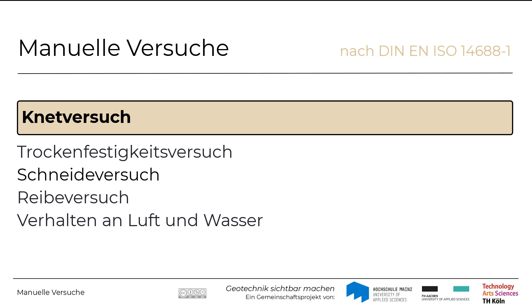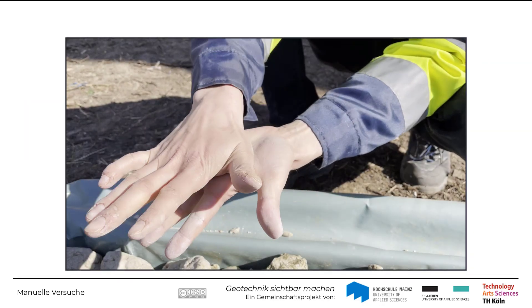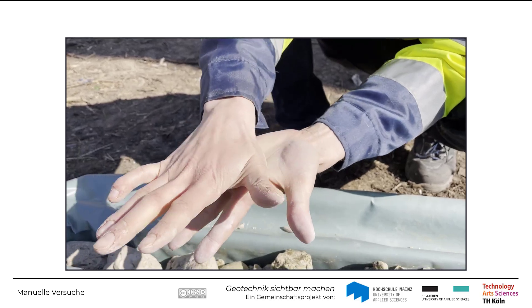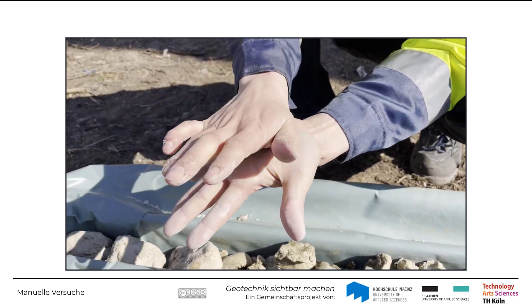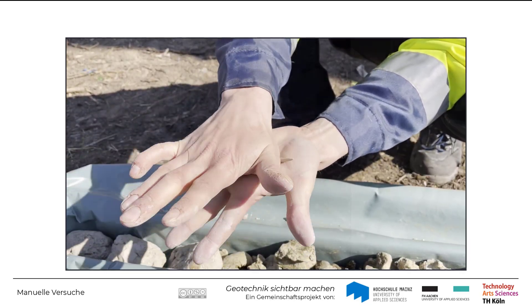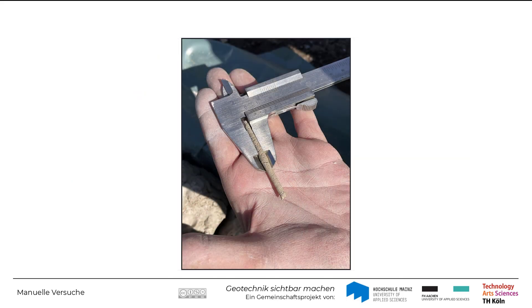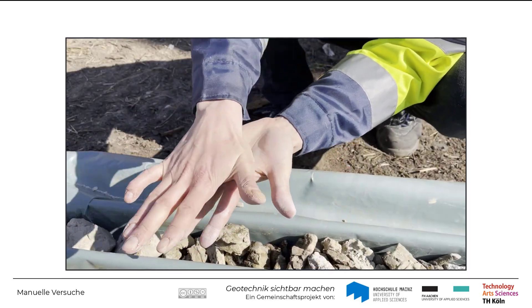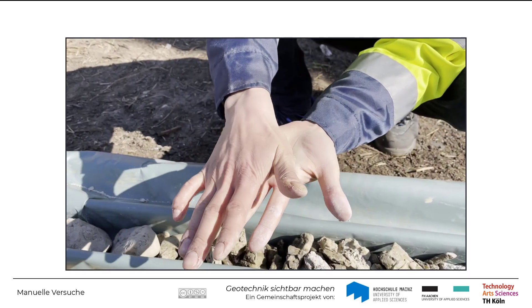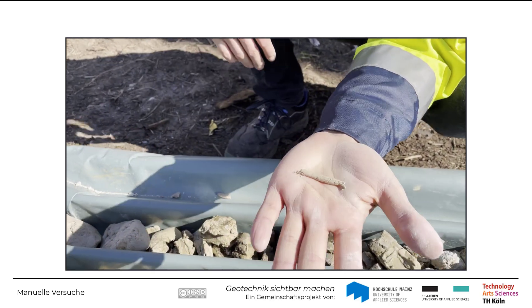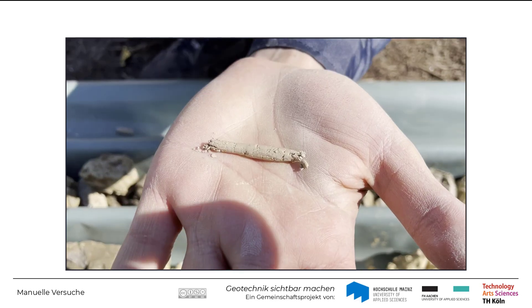Nun sehen Sie den Knetversuch, der die Plastizität und Zähigkeit des Bodens untersucht. Die Probe wird hierzu in eine längliche Form gebracht und gerollt und gefaltet. Dies wird so lange wiederholt, bis sie eine Dicke von etwa 3 Millimetern erreicht. Abhängig vom Verhalten der Probe bei diesem Ausrollen kann die Plastizität des Bodens wie folgt beschrieben werden.